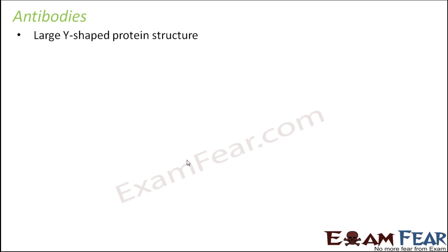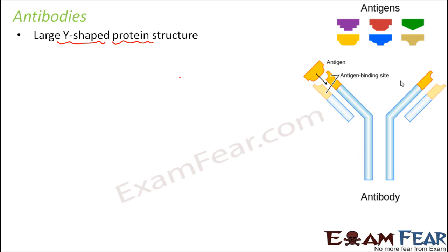Let us first discuss antibodies. Antibodies are large Y-shaped protein structures — basically they are all proteins, but they have a specific structure. Each antibody molecule will have a specific structure because of which they will be able to bind to pathogens and fight against them. The Y-shaped structure is what we have to focus on — this is how the antibody looks like.